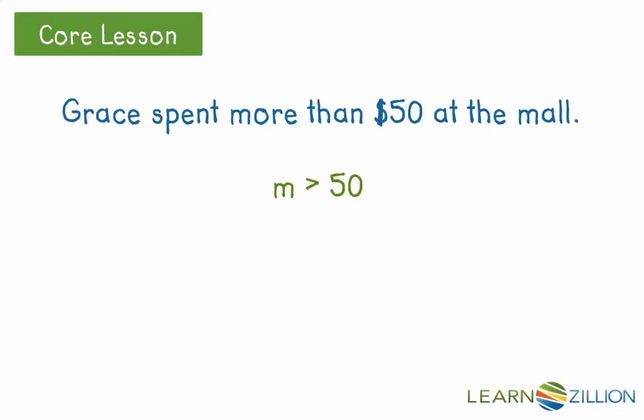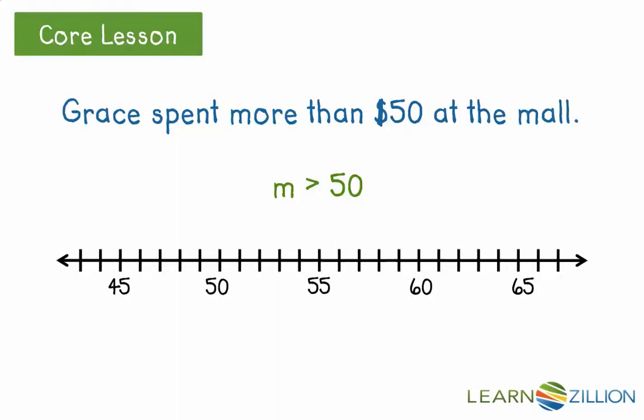We can represent our situation by writing an inequality, but we can also create a graph. Did Grace spend $50? No — we only know that she spent more than that, so we cannot include 50 in our set of numbers, so we use an open circle. Since our variable m is more than 50, we shade the graph to the right to show all the values greater than 50. We can see that she could have spent $65 or $53.25 — all values in our graph are greater than 50.